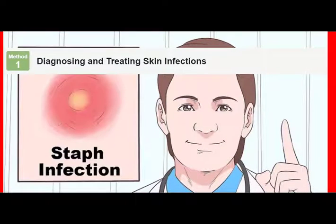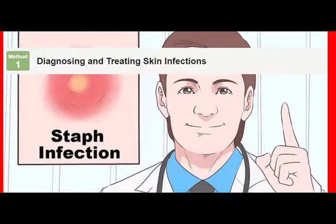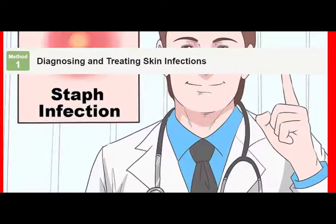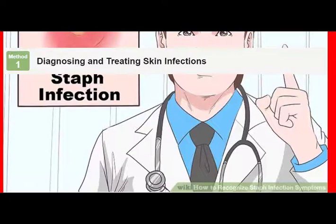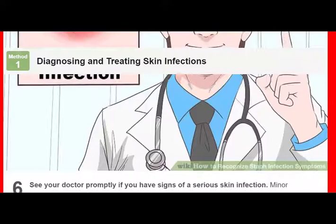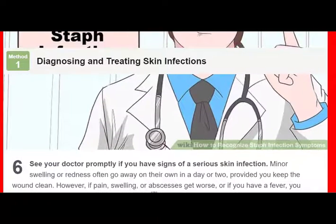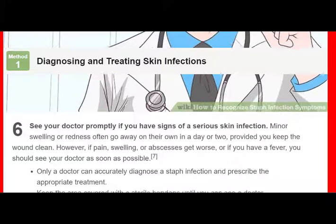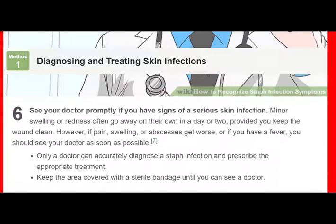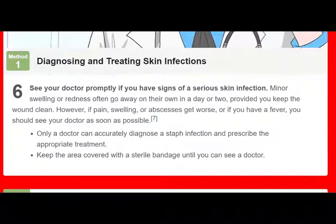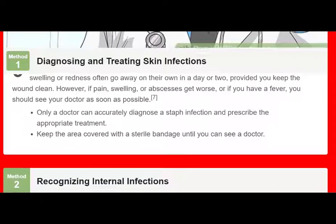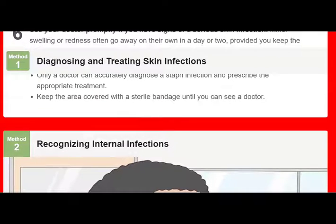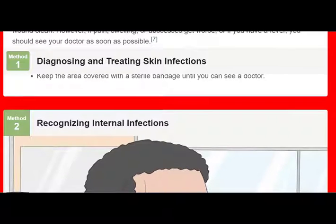Get immediate help if you have symptoms of sepsis. Sepsis is a serious condition caused by the body's immune response to a widespread bacterial infection. Symptoms include fever above 102 degrees Fahrenheit (39 degrees Celsius), chills, disorientation, rapid heartbeat, and shortness of breath. Without prompt treatment, sepsis can lead to blood clots, poor blood flow, and organ failure. Sepsis is a medical emergency, so go to the hospital as soon as possible if you have an infection that isn't healing and have symptoms of sepsis. While anyone can develop sepsis, it's more likely in people with compromised immune systems, infants, the elderly, people with chronic illnesses such as kidney or liver disease, and after a serious burn or injury.